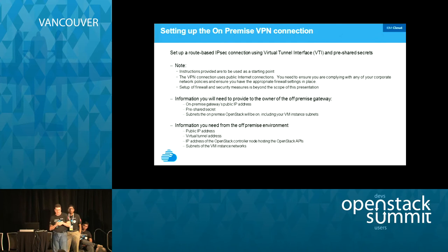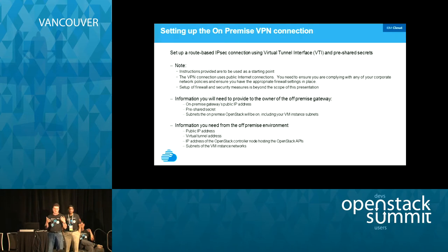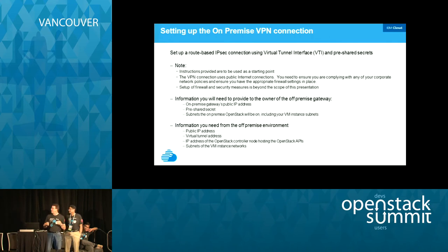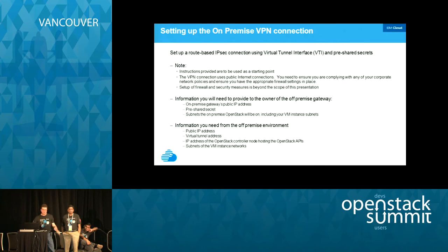A slight disclaimer on configuring the VPN: the steps here use public IP addresses between the two endpoints. If you go back to your company to implement this, you may have firewall rules and security settings in your environment that prevent using public IP addresses — you'll need to work with your network administration to allow that. The bottom half of this chart has two sections: information you need to provide to the off-premise site, and information they need to provide to you so you can set the VPN correctly.